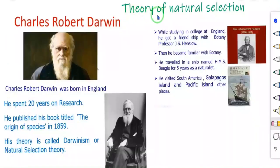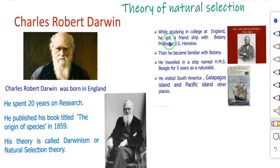The theory of natural selection was proposed by Charles Robert Darwin. Charles Darwin was one of the great naturalists and philosophers of the 18th century, born in England in 1809. While studying in college, through his friendship with botany professor J.S. Henslow, he became fascinated towards nature and became familiar with botany.